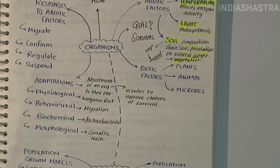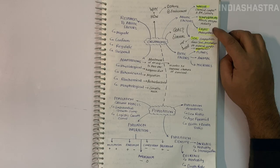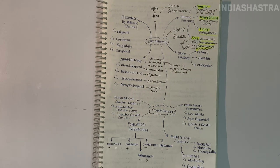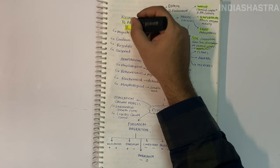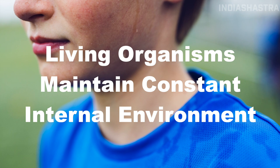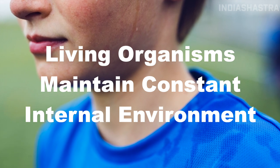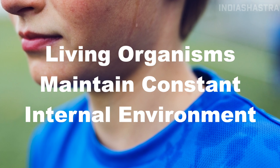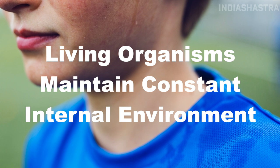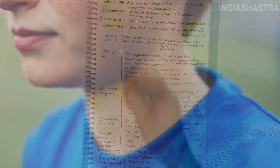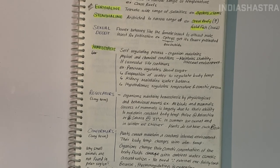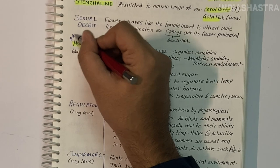Now let us learn about how organisms respond to abiotic factors. How do organisms living in such habitats cope with stressful conditions? During millions of years, species have evolved a relatively constant internal environment that permits all biochemical reactions and physiological functions to proceed with maximal efficiency, enhancing overall fitness. This is called homeostasis — a self-regulating process by which an organism tends to maintain stability while adjusting to conditions best for its survival.